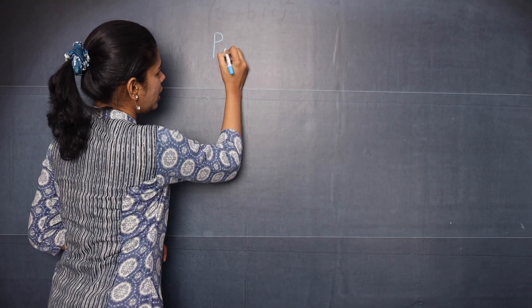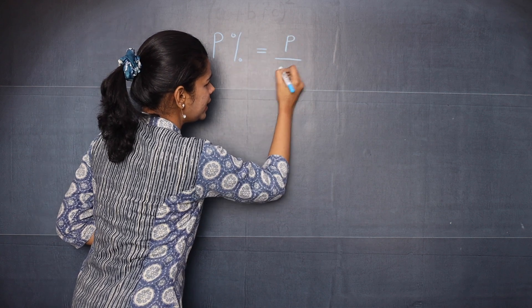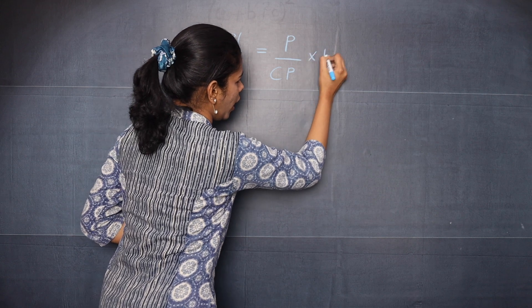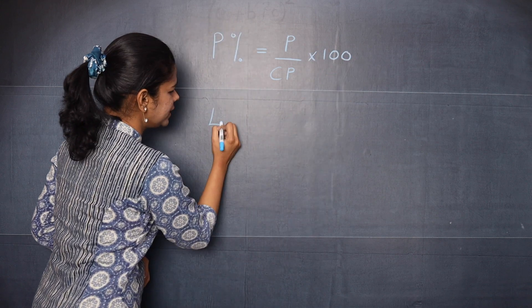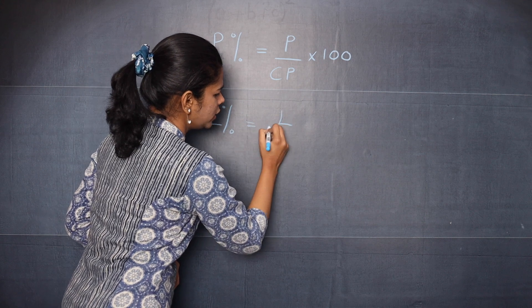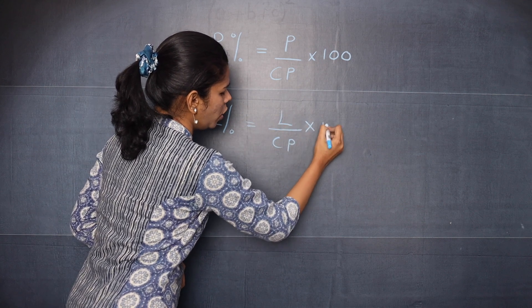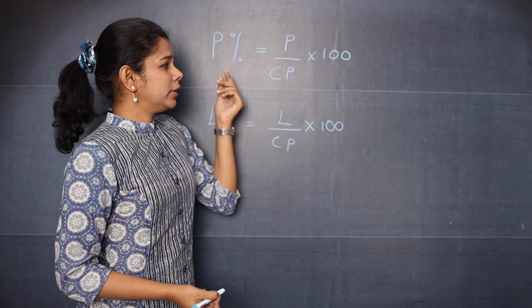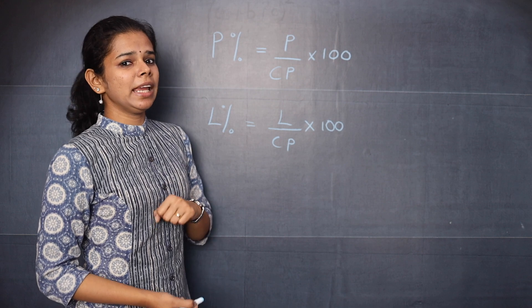But what if the selling price and the cost price are the same? You neither have profit nor loss. Now let's learn how to calculate profit percentage and loss percentage. Both are calculated on CP — because CP always remains constant no matter whether you have profit or loss. So profit percentage equals profit divided by CP, multiplied by 100, and loss percentage equals loss divided by CP, multiplied by 100.